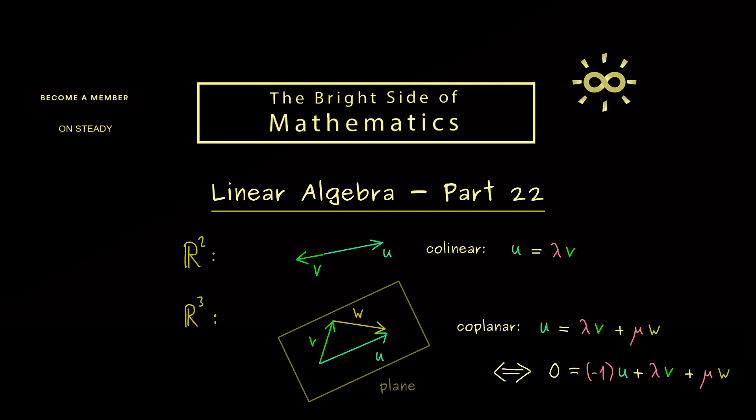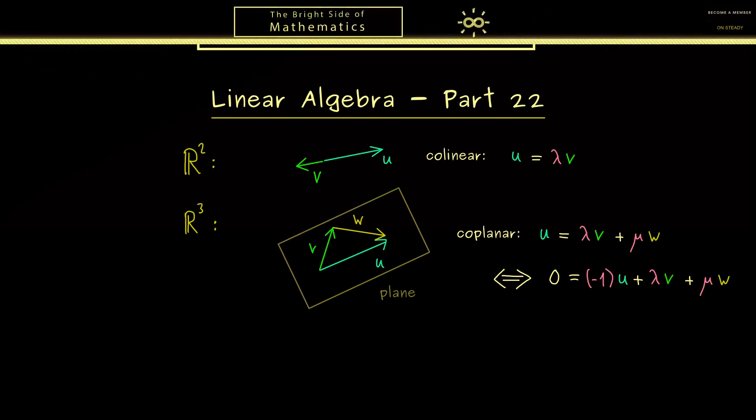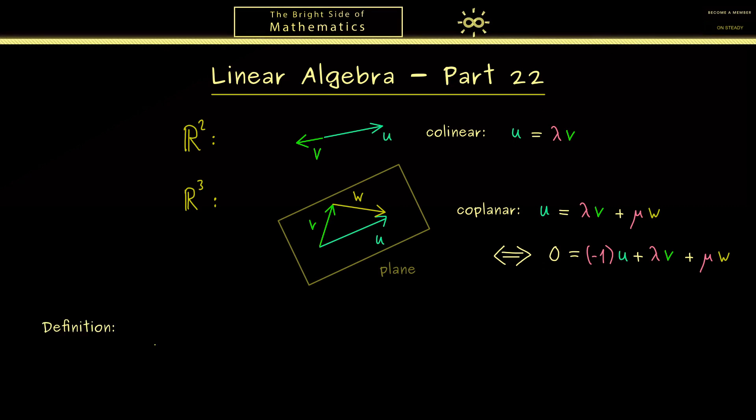And exactly this is now what we can generalize. So we want this notion of linear dependence in our general vector space ℝⁿ. And it should also make sense for different numbers of vectors. Hence, to keep it general, let's take k vectors out of ℝⁿ.